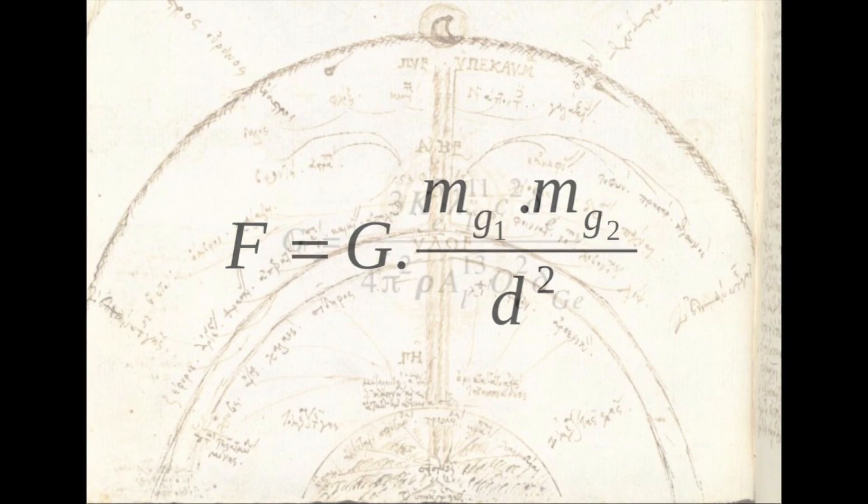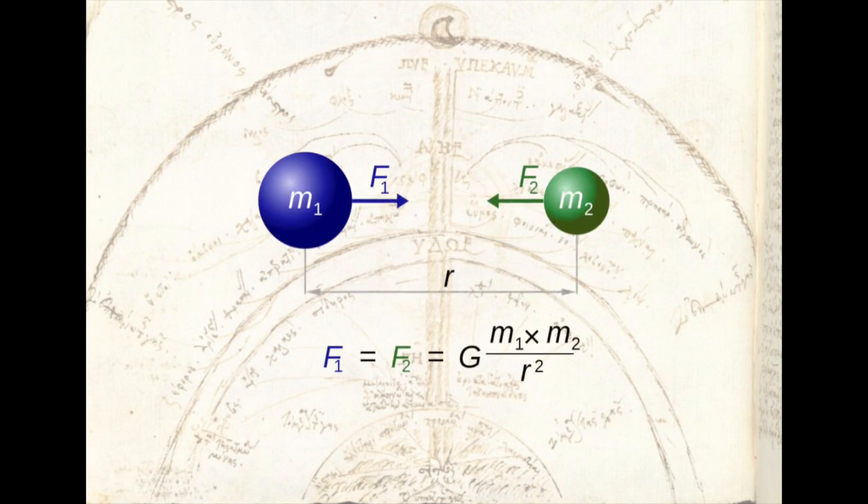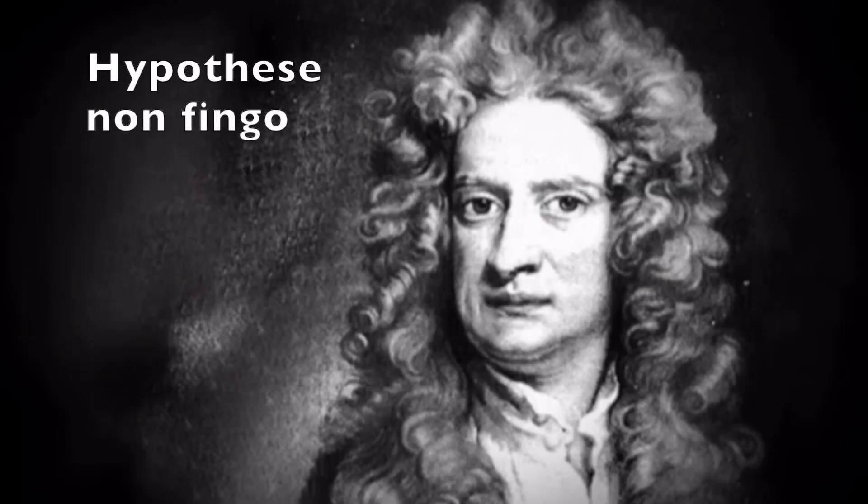This gravitational constant didn't need to be explained or theorized. Newton, in fact, said it was sufficient to observe that the data implied some attracting force, but beyond that said hypothesis non fingo, or I frame no hypotheses about what the force is or how it works.